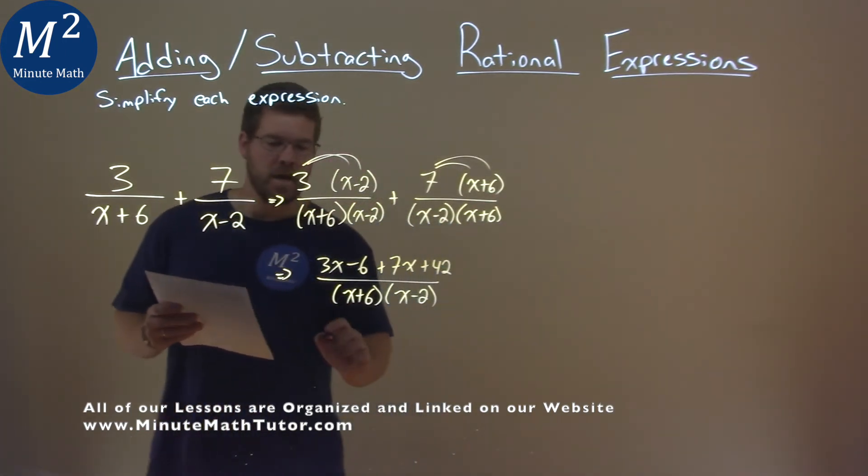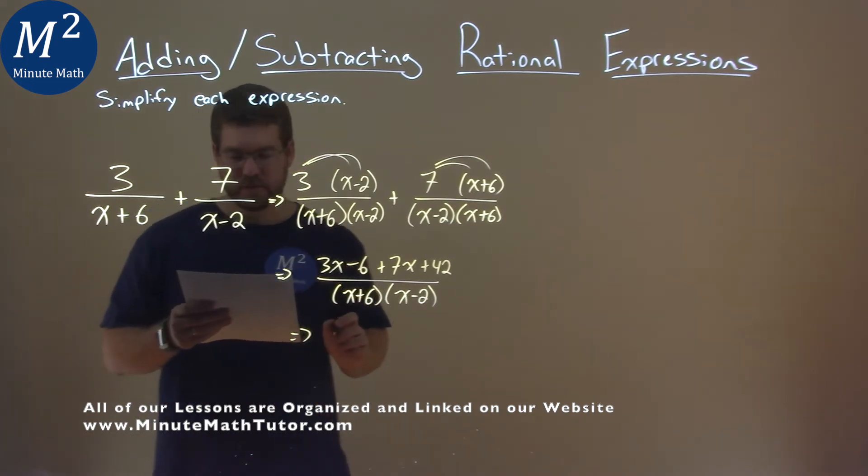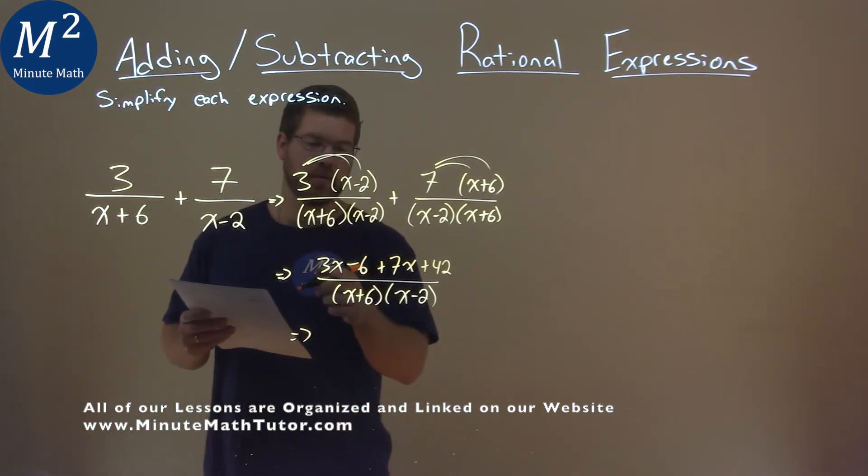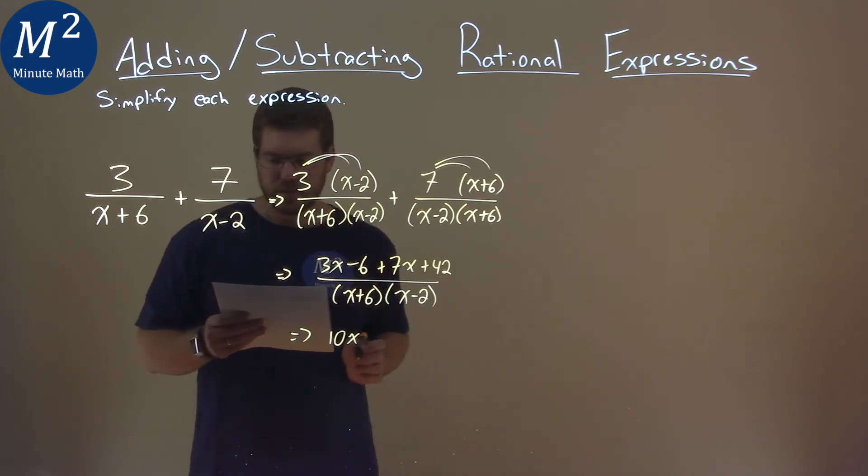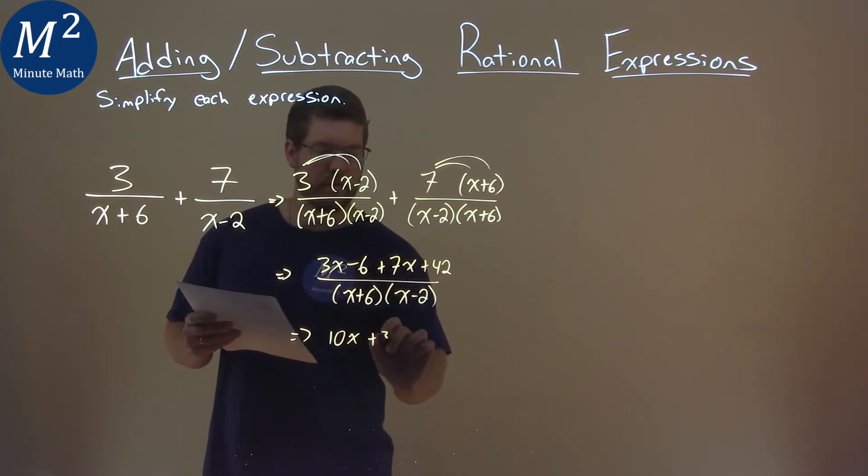We now want to combine our like terms, and that's mostly in the numerator. 3x plus 7x is 10x, minus 6 plus 42 is positive 36.